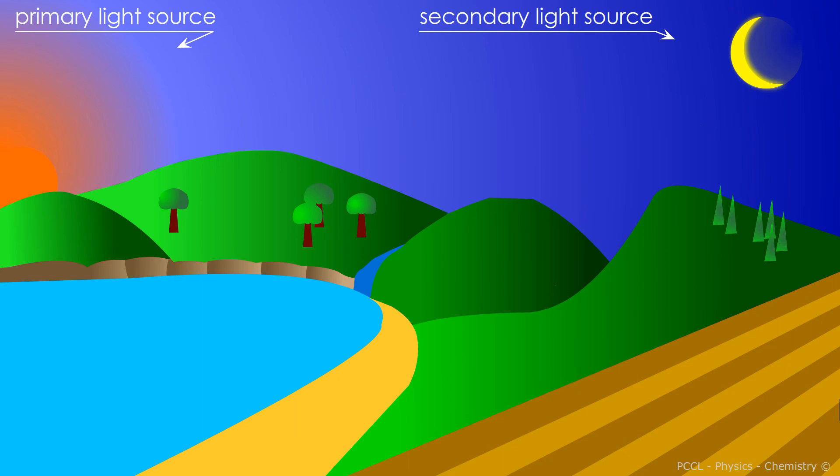The sun is a primary source. The moon diffuses the light of the sun — it is a secondary source of light.